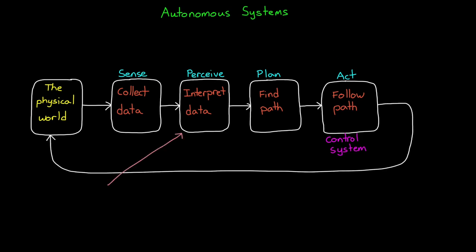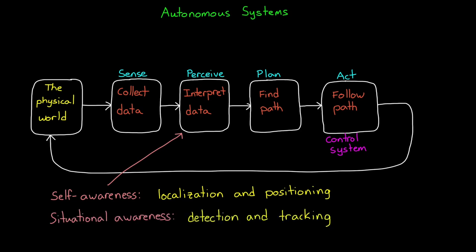Let's go back to the Perceive step because I want to go into a little more detail here. This step has two different but equally important responsibilities. It's responsible for self-awareness, which is referred to as localization or positioning - answering questions like where am I, what am I doing, and what state am I in. But it's also responsible for situational awareness, things like detecting other objects out in the environment and tracking them.